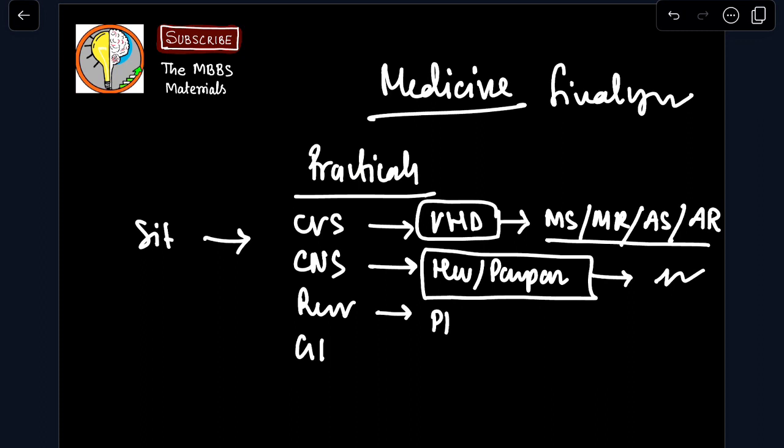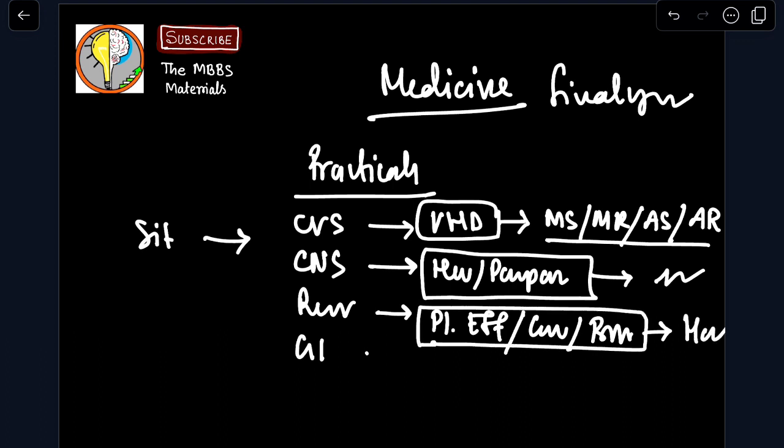Then in respiratory, the important is pleural effusion, consolidation, bronchiectasis. You read this from Arup Pundu, then you go for Harrison.